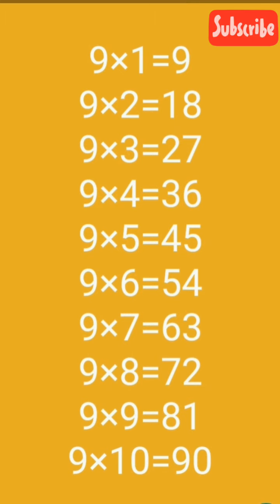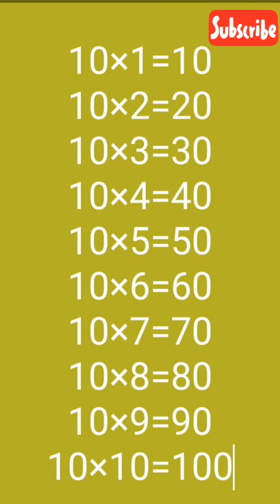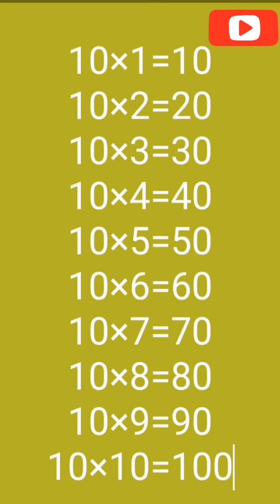10th Table. 10 1's are 10, 10 2's are 20, 10 3's are 30, 10 4's are 40, 10 5's are 50.